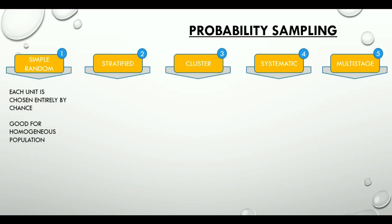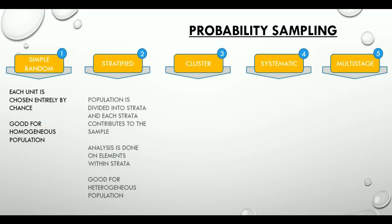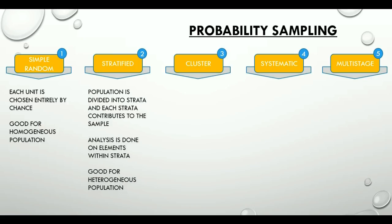Stratified sampling: the population is divided into strata and analysis is done within the strata. It's good for a heterogeneous population.